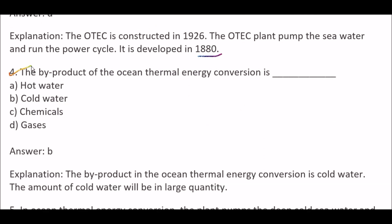Next question: The byproduct of the ocean thermal energy conversion is — Option A, hot water; Option B, cold water; Option C, chemicals; Option D, gases. Right answer is Option B, cold water. The byproduct in the ocean thermal energy conversion is cold water, and the amount of cold water will be in large quantity.